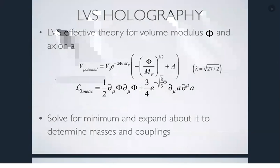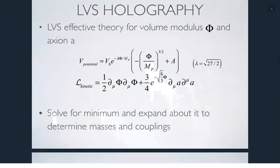With this effective field theory, you've got a potential and kinetic terms, so you can solve for the minimum, expand about it, and obtain an effective theory. The details of how you get here don't really matter so much for this talk — the point is that we have a scenario of moduli stabilization leading to a particular effective Lagrangian about AdS space. The question this talk addresses is: are there ways we can tell whether or not this Lagrangian is consistent? And because it's an AdS space, we can use holographic ideas from AdS/CFT.